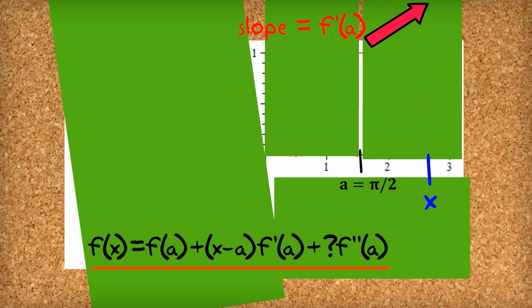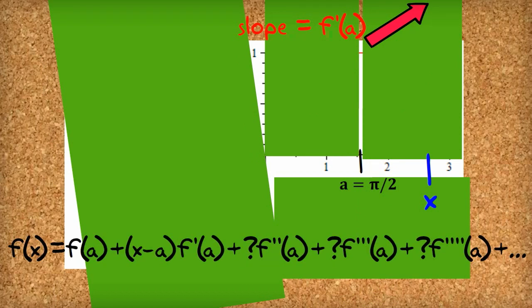So then the final student says, well, I can't help you with what the question mark should be, but I know that you can extend the argument. So we should actually have something to do with the third derivative, the fourth derivative, and it goes on and on forever. So we can start adding these plus a question mark times these higher derivatives at the point a.